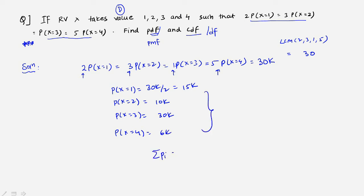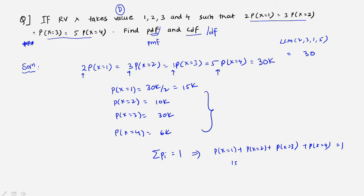We know that the summation of all probabilities must equal 1. So adding all terms: 15k + 10k + 30k + 6k = 1, which gives 61k = 1, so k = 1/61.